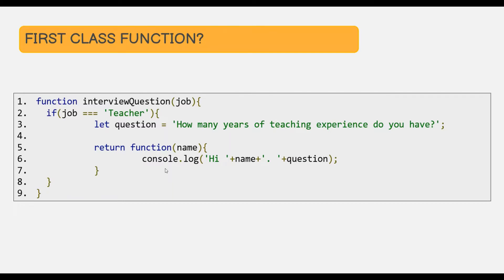With these three examples, I hope the concept of first class function is clear. Since in JavaScript a function is just another value, we can treat it like any other value. We can assign it to a variable, we can pass it as an argument, and we can return it from within a function.